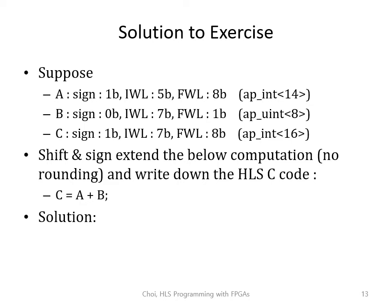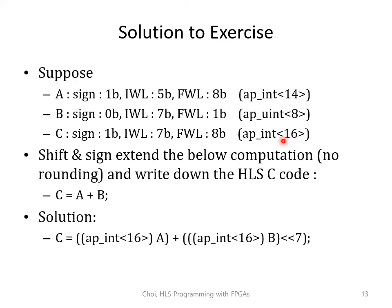The solution: variable A has 8 fractional bits and variable B has 1 fractional bit. So you need to add 7 bits of zeros to B by left shifting by 7 bits. Next, variable A has 5 bits of IWL and 1 sign bit, while variable B has 7 bits of IWL but no sign bit. So variable A needs a sign extension, and variable B needs to add a sign bit. Both can be done with typecasting to the type of variable C, which is APINT<16>. The solution is A typecasted to APINT<16>, and variable B also typecasted to APINT<16> and left shifted by 7 bits.